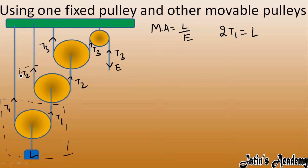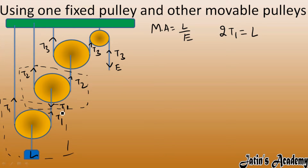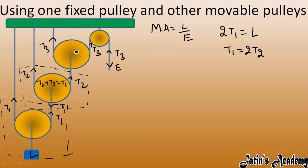Now focus on the second pulley. For this pulley, the tension T1 acts downward, while T2 and T2 act upward, balancing T1. So T2 + T2 = T1, giving us T1 = 2 × T2. For the third pulley, T2 acts downward and T3 and T3 act upward, so T2 = 2 × T3.